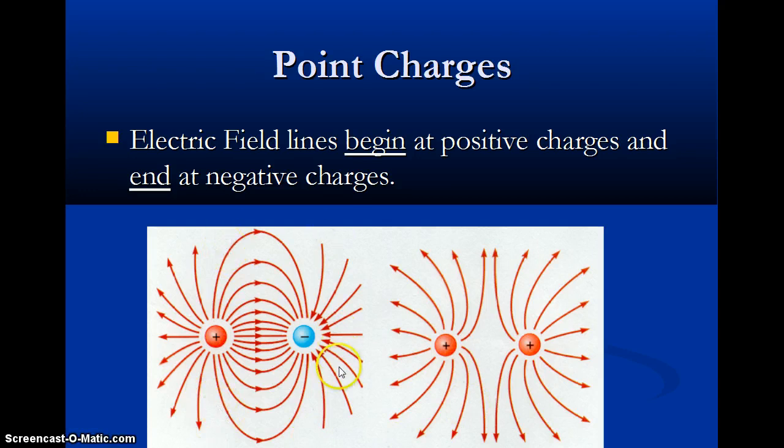One thing when you're drawing electric field lines, they never cross because it doesn't really make sense because if the lines cross, then you put a charge there. You wouldn't know where it was going to go. You just kind of find the net effect on that charge.